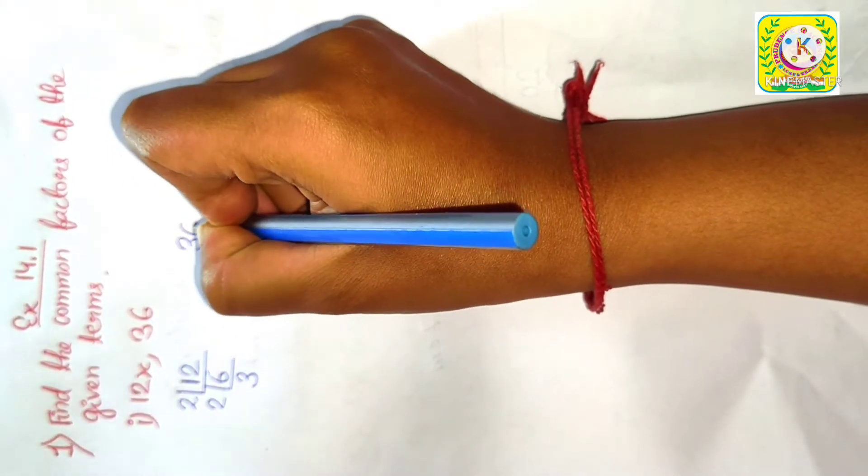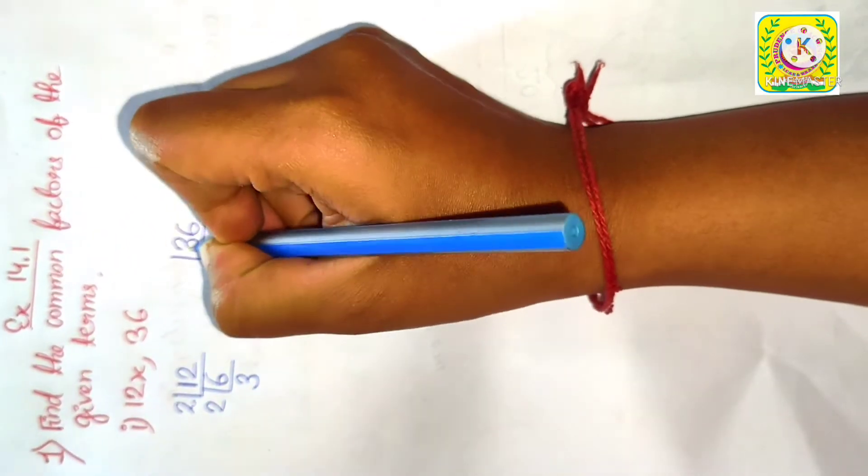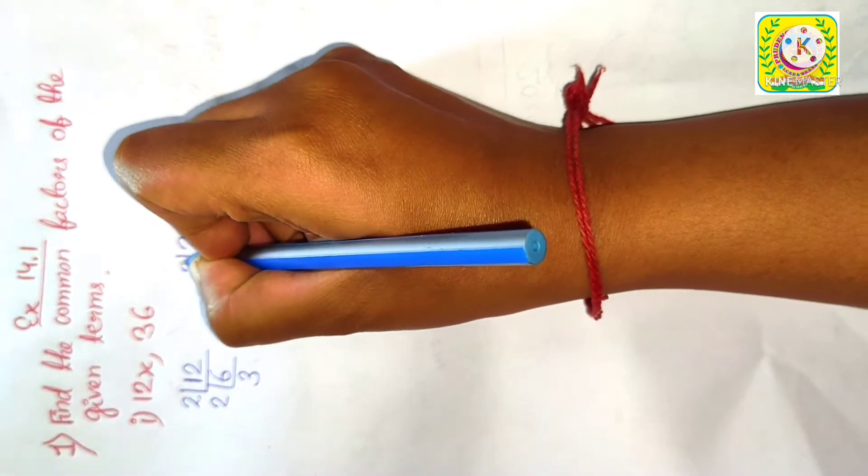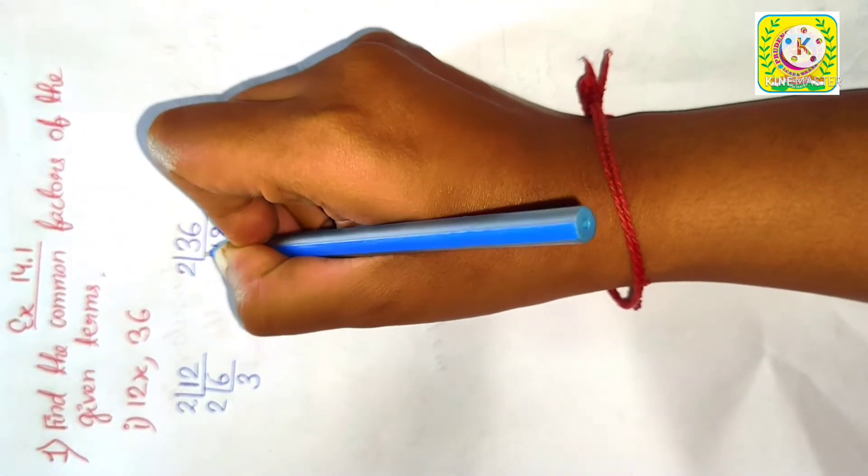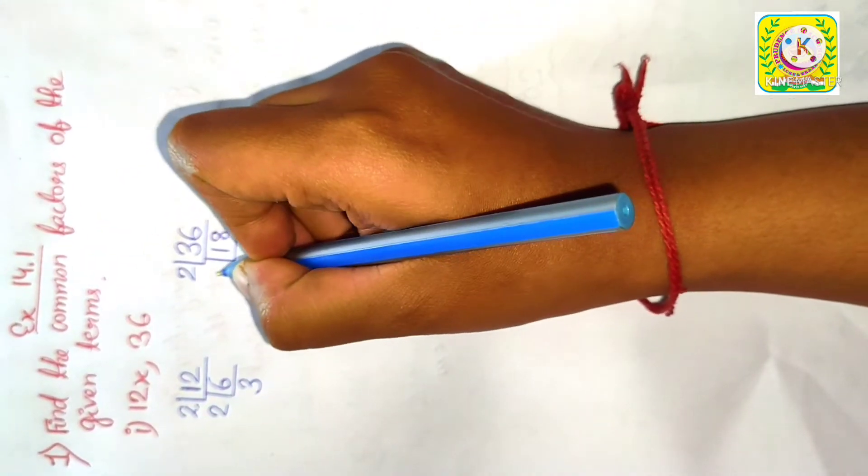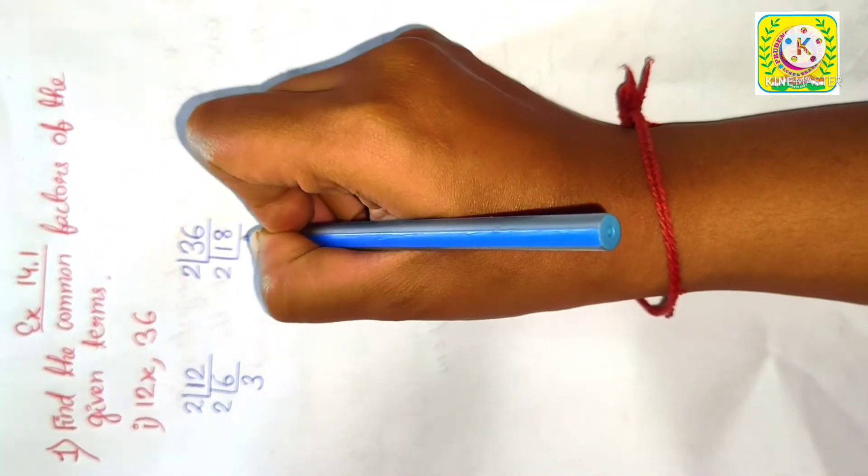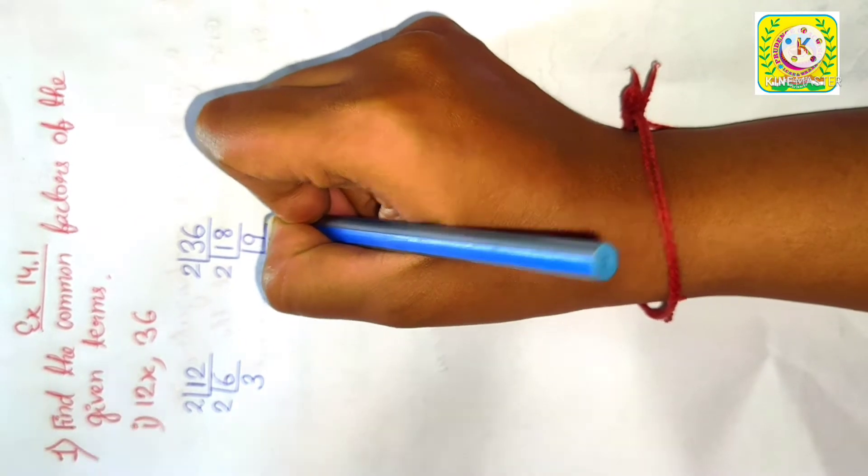Similarly, we will be finding out the prime factorization of 36. As we have 6 at the end, that means it is divisible by 2. 2 into 18 is 36. Again, 18 is divisible by 2, so let us divide it by 2; we will get 2 into 9 is 18.